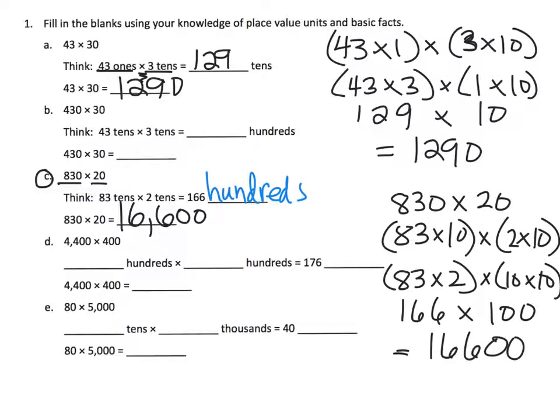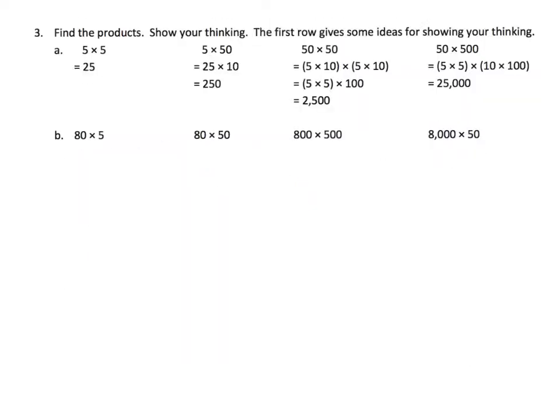This slide is really just a bunch of practice, so we're going to start with 80 times 5. We know that 80 is 8 copies of 10 times 5. Now 5 can be thought of as 5 copies of 1.